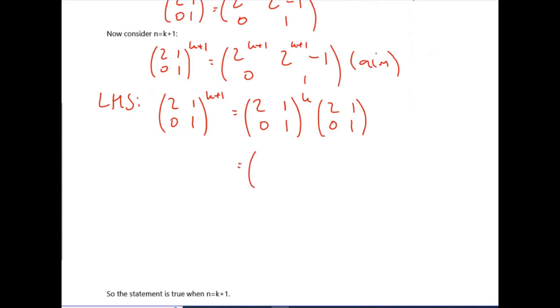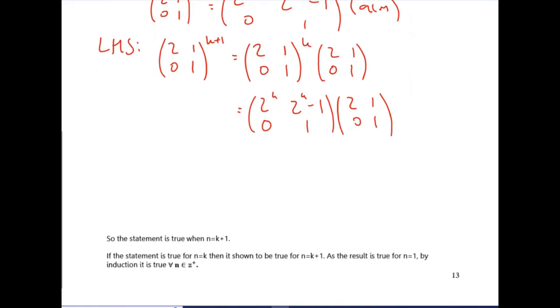This means we can use our assumption step from earlier on because we assumed that the matrix to the power k is equal to this. Now all it is is the case of matrix multiplication and hoping to end up with what you're aiming to get.